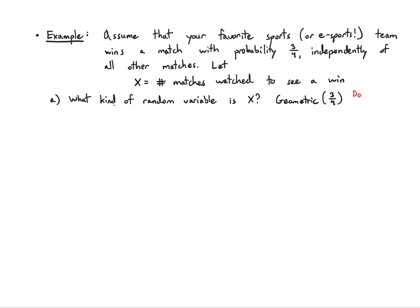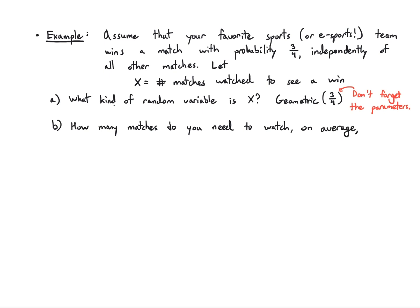Don't forget to write down the parameters — important advice for exams and homework. How many matches do you need to watch on average to see a win? The mean of a Geometric random variable is 1/p, so plugging in 3/4 gives 1/(3/4) = 4/3.